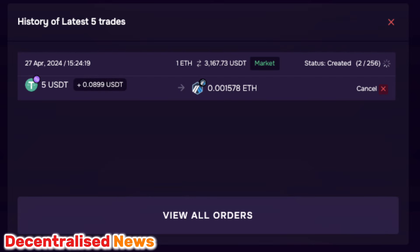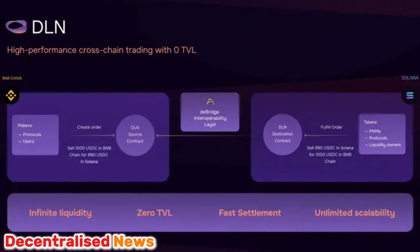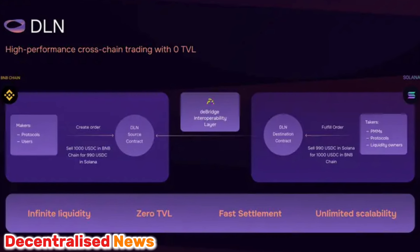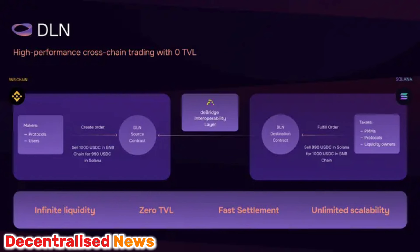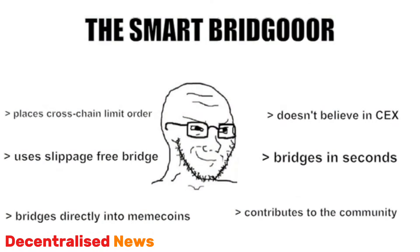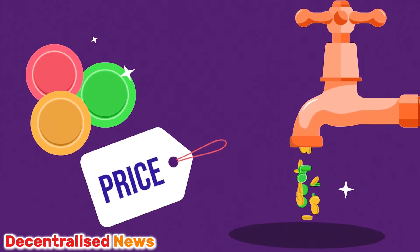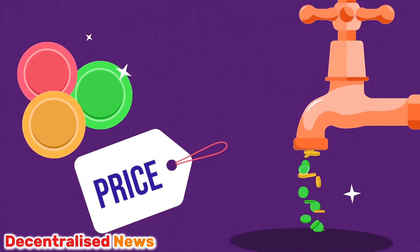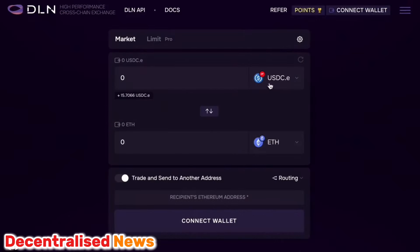What makes DLN unique is that it's a very seamless, easy-to-use platform. The deSwap Liquidity Network is a high-performance cross-chain trading engine powered by deBridge, featuring a distinctive zero-TVL — zero total value locked — design. It avoids the use of liquidity pools by executing all trades asynchronously through a self-governing liquidity network. This setup allows developers and projects to experience the fastest cross-chain operations available, with swift liquidity transfers, quick finality, and better performance than traditional cross-chain solutions.